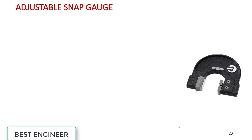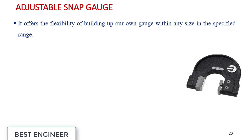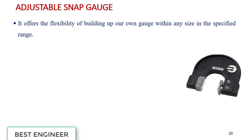Adjustable snap gauge. This one is the adjustable snap gauge. We can adjust the dimensions. It offers the flexibility of building up our own gauging within any size in special range. It is preferred where the number of components to be inspected is less and more variety of the size to be inspected is more.